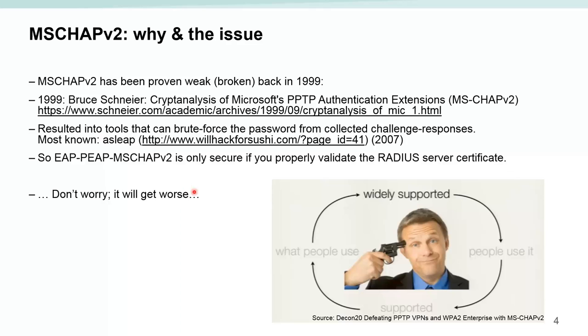The big issue is that even today many people are still using MSCHAPv2. The problem is that it is widely supported, very convenient, and it ties nicely into Active Directory. This creates an infinite circle — it is widely supported, so it gets more support, which is why people keep using it. It is very difficult to break out of this cycle, and for that reason I decided to record this and put it on YouTube.